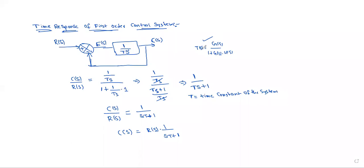This is a negative feedback system. Using the negative feedback transfer function formula: C(s) divided by 1 plus C(s)·H(s). Substituting 1/Ts, we get TS plus 1 over TS, and the TS terms cancel, giving us 1 by TS plus 1. So C(s)/R(s) is equal to 1 by ST plus 1, where T is the time constant of the system.